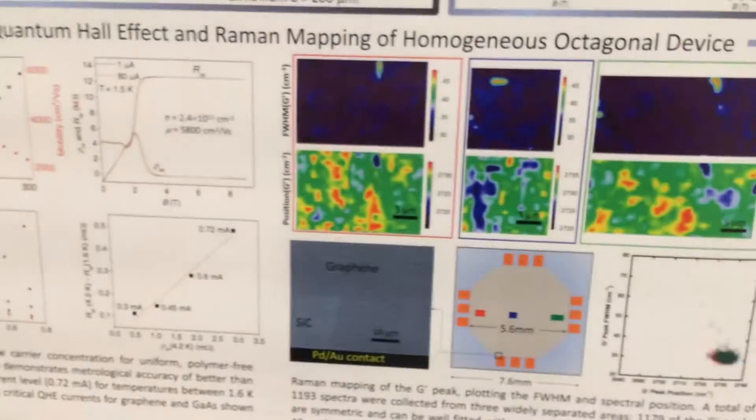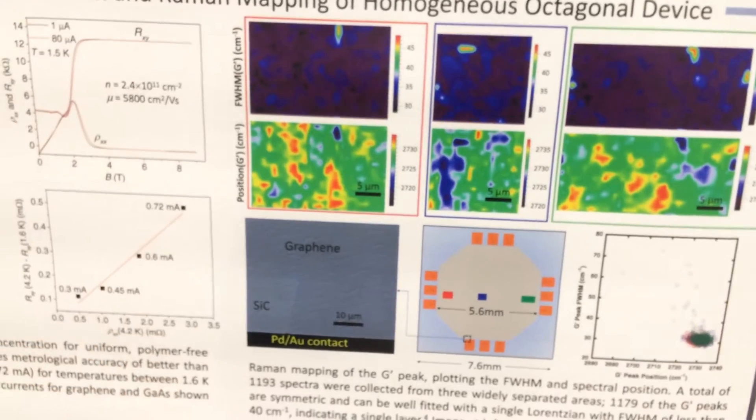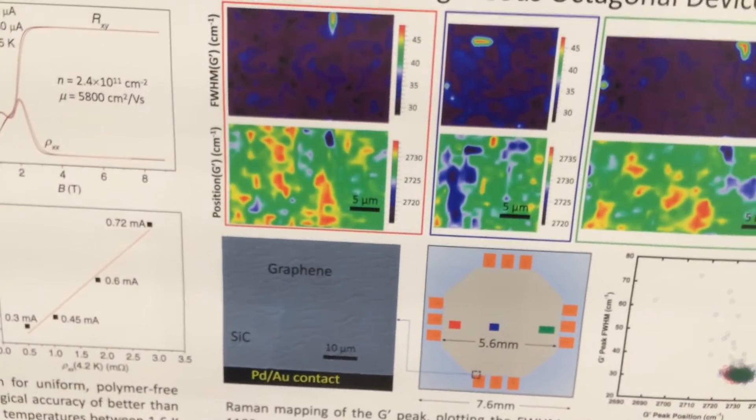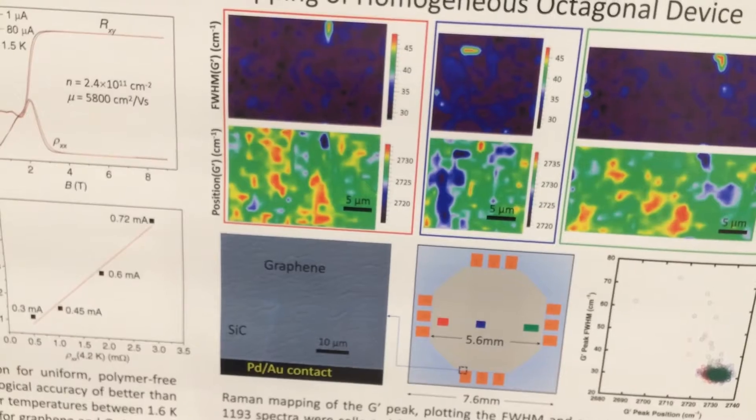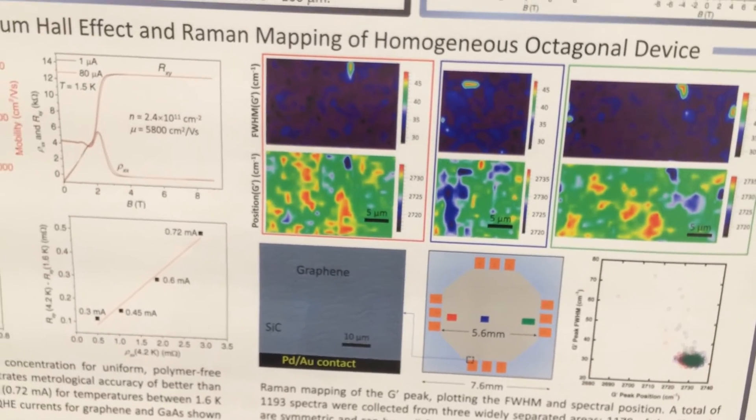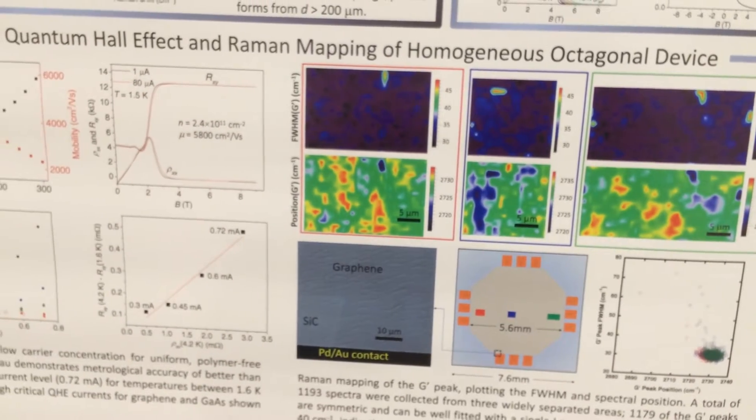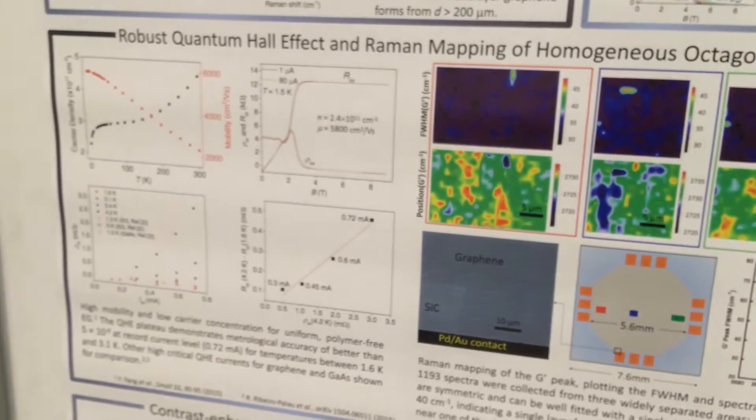Here you can see from Raman microscopy and also from optical microscopy, the contrast in the optical image. Combined with transport measurements, we can see this material is homogeneous in a large area at millimeter scale.